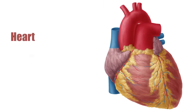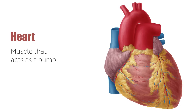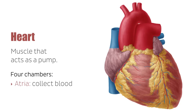The heart is a muscle that acts as a pump. Through electrostimulation, it beats and pushes the blood around the entire body through the circulatory system. The heart is comprised of four chambers that consist of two pairs on the left and right sides of the heart. The atria collect blood returning to the heart, while the ventricles pump blood out of the heart.